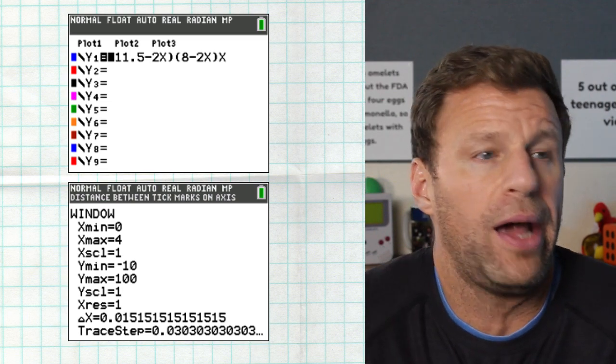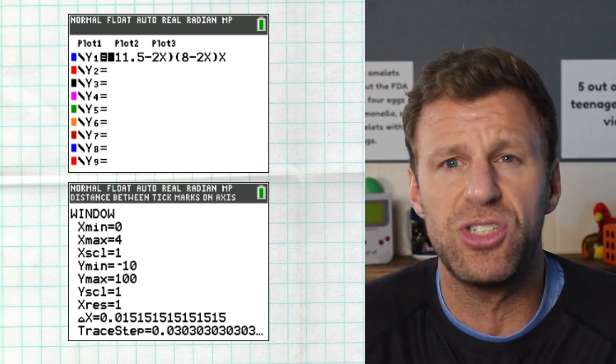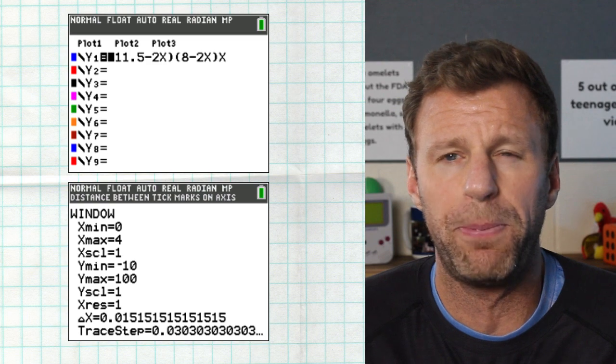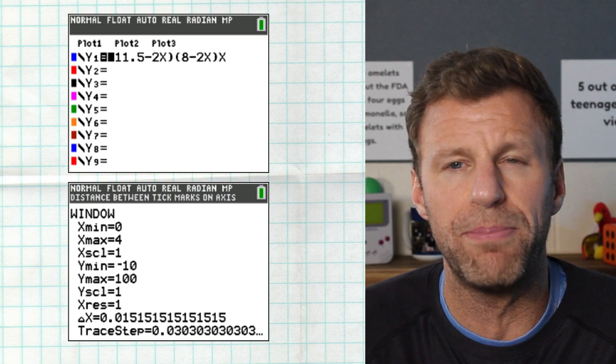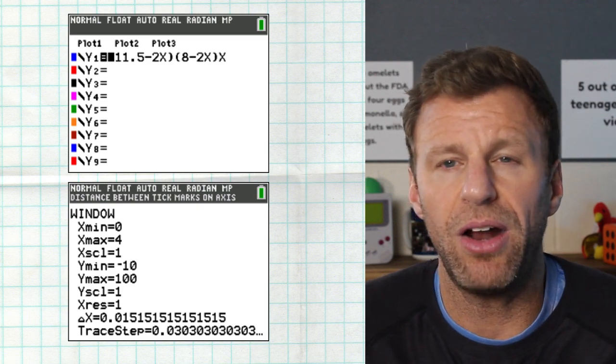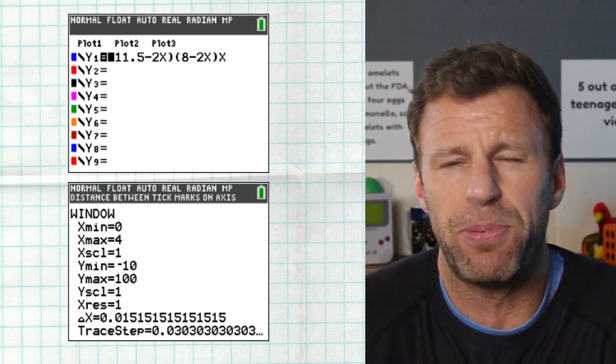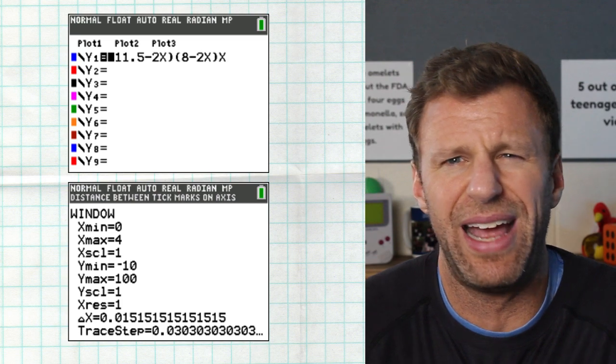And then, I mean, I don't know, maybe you have no idea what the max is. You could start off with just the area of the piece of paper, 8 times 11 and a half, and get a number that way. But I went ahead and just made the Y max 100. I thought, alright, a volume of 100, the piece of paper starts off with 8 by 11 and a half.